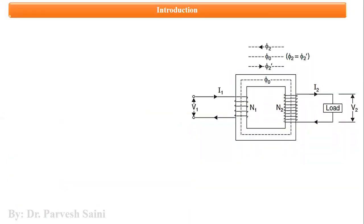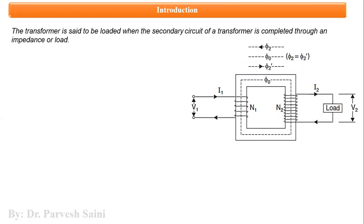A transformer is said to be on load when the secondary winding is connected to some load or impedance. As you can see in this diagram, when we connect the secondary winding to a load, current in the secondary winding will start flowing at its rated value as specified by the manufacturer.